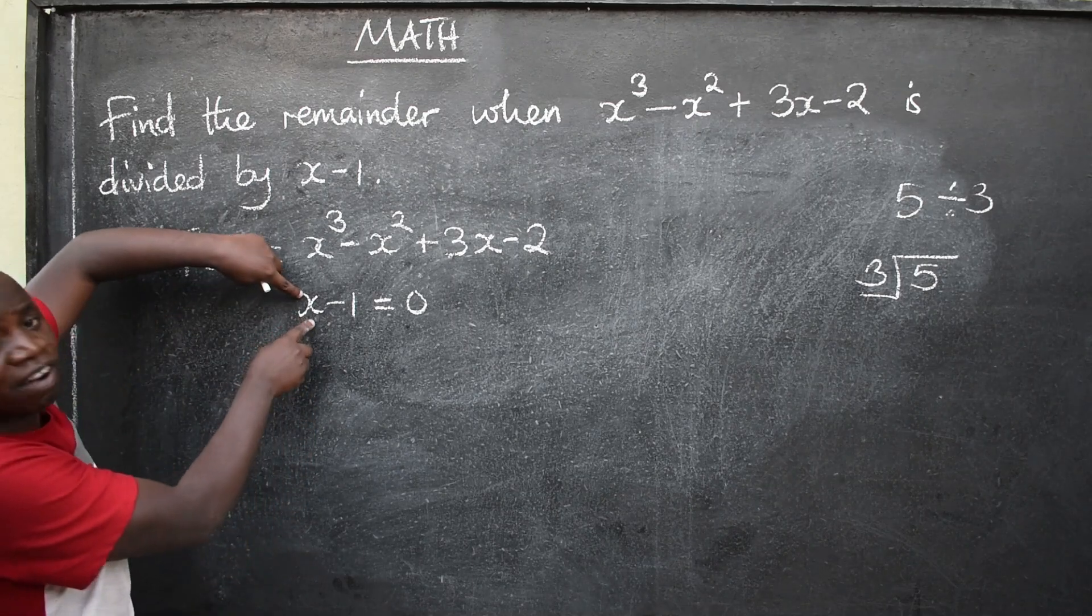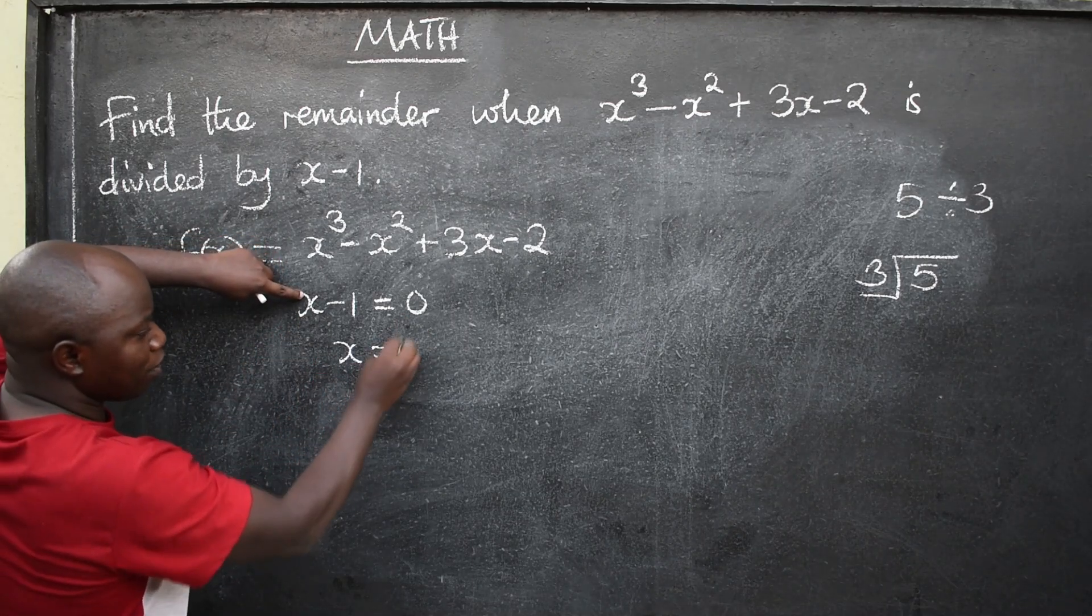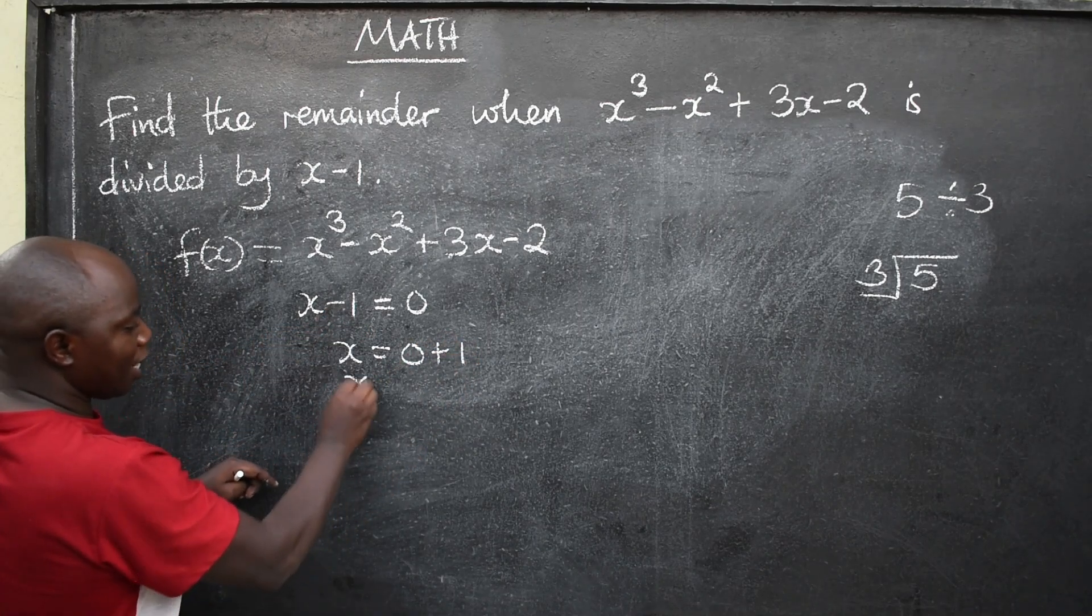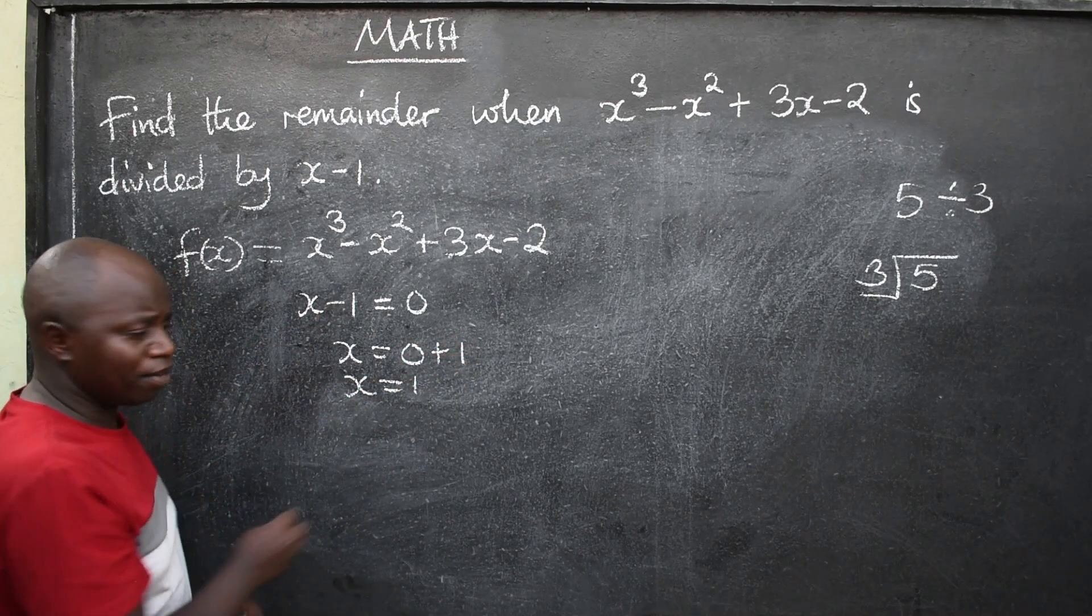When you equate it to 0, you are going to find the value of x, which will be x is equal to 0, this negative 1 will be positive 1, and x will be equal to 1. Are you seeing that?